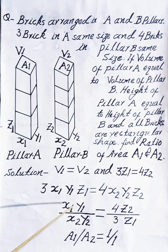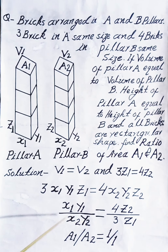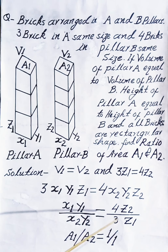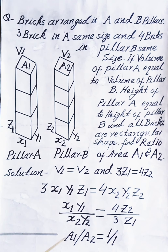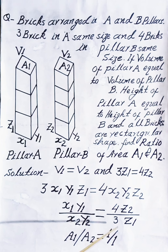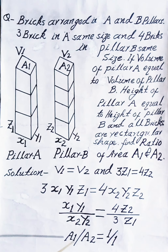Rearranging: x1·y1 divided by x2·y2 equals 4·z2 divided by 3·z1. Here x1·y1 equals area a1, and x2·y2 equals area a2. Since 4·z2 equals 3·z1, we get a1 divided by a2 equals 1 divided by 1.